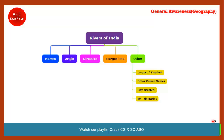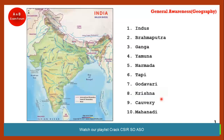This is a concept map for this video. We will understand Rivers of India with five major points: what are the names, what is their origin, how and in which direction they are flowing, where they merge, what are their other known names, what cities are situated near them, and their main tributaries. So without further ado, let's see the rivers — these are the 10 rivers you should at least know.